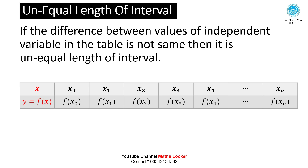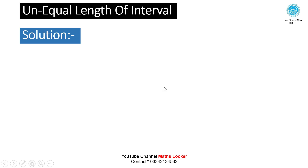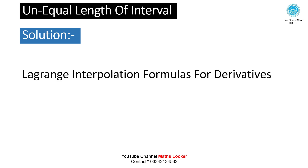We have information in the form of a table with end points. The difference between x1 minus x0 is say h, but the difference between x2 minus x1 is not h. This is what we call an Unequal Length of Interval.